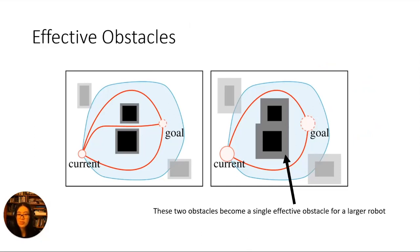When computing path prospects, we also need to make sure that we're considering the coupling between a robot's mobility and the environment. So we define the notion of effective obstacles. An effective obstacle is a subset of some of the original obstacles in the environment where, for the given robot, there is no valid trajectory that passes between any of the obstacles in the subset. So the large robot treats the two central obstacles as one single effective obstacle since it can't go between them.